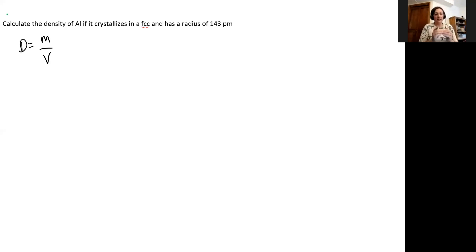And so we can do that. The density of the unit cell will be the same ratio as the density for the entire structure. So what we need to know is the mass of the aluminum atoms inside the unit cell. And we need to then know the volume of the unit cell.